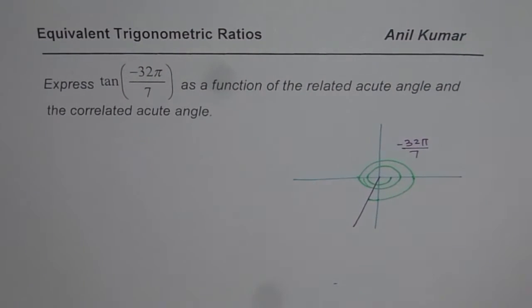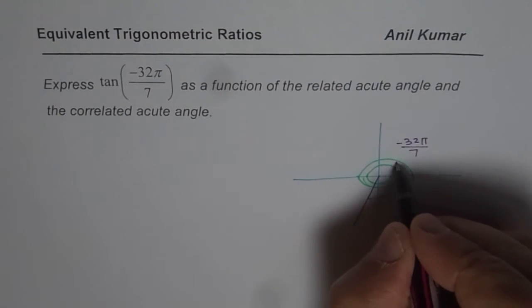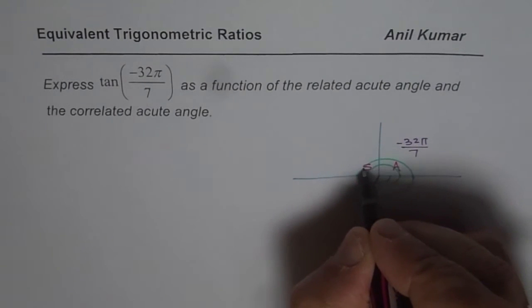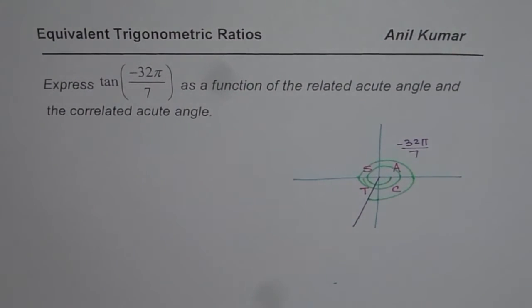Now since you are in quadrant 3, tan should be positive, right? You know the rule. All are positive in quadrant 1, sine in 2, tan in 3 and cosine in 4. So we are expecting a positive answer to start with.